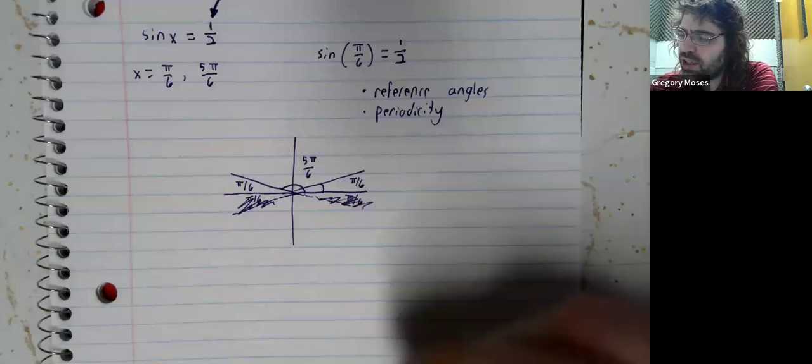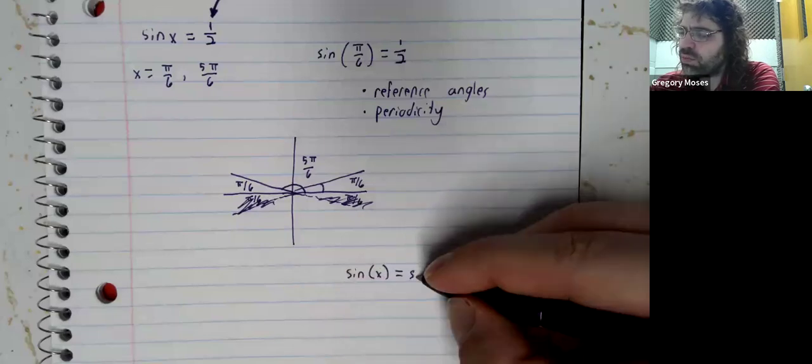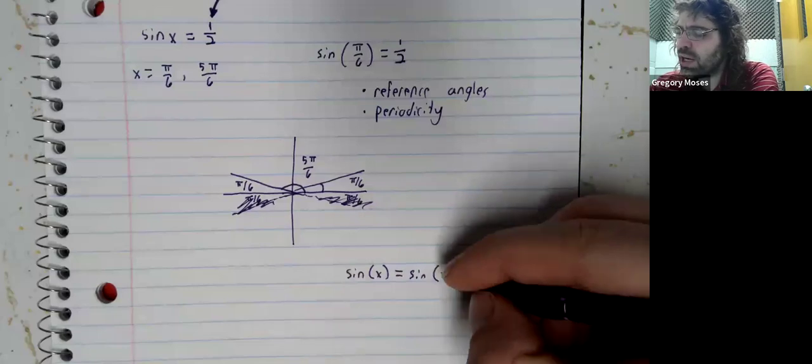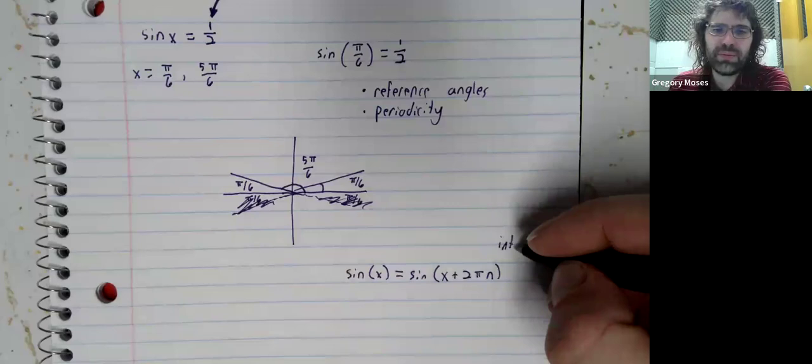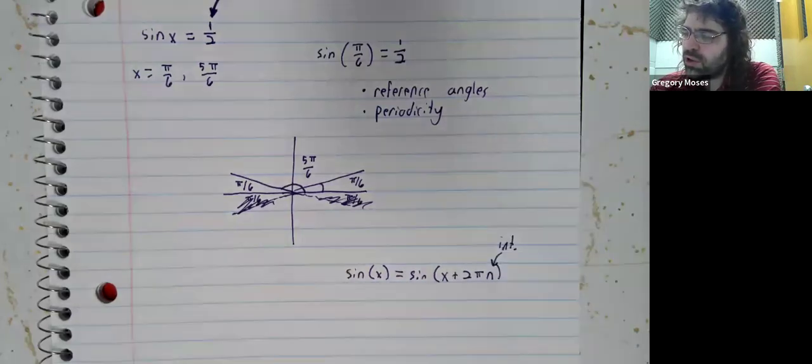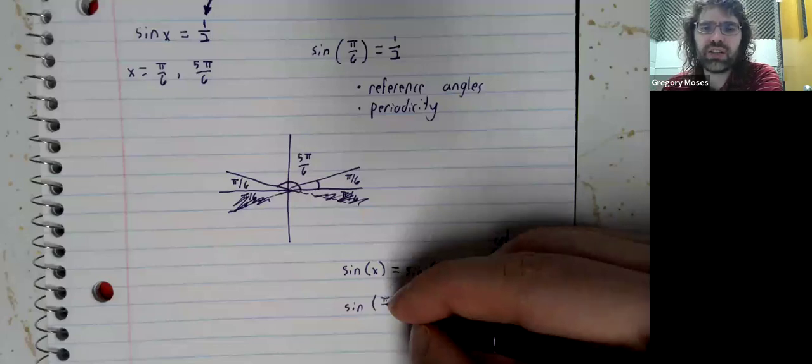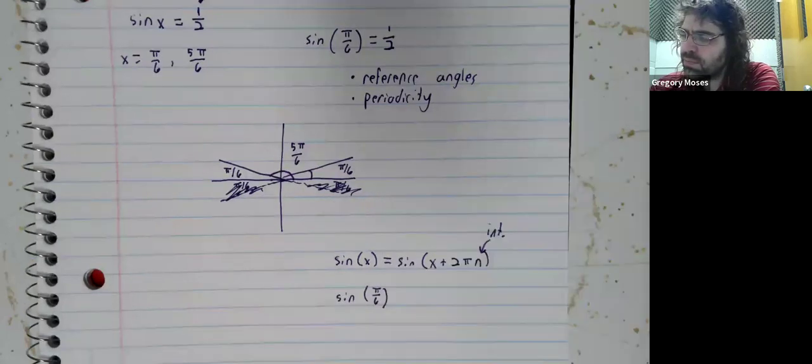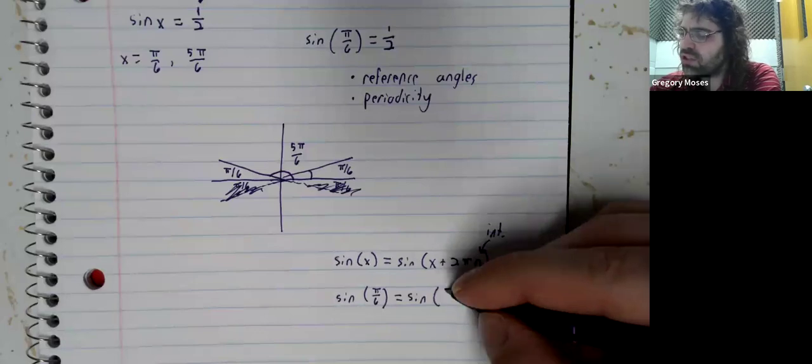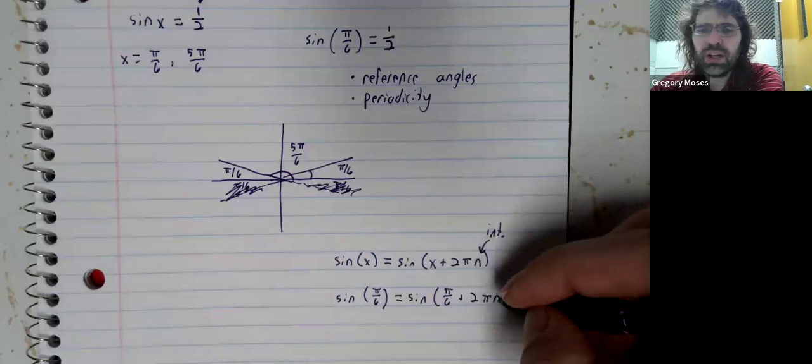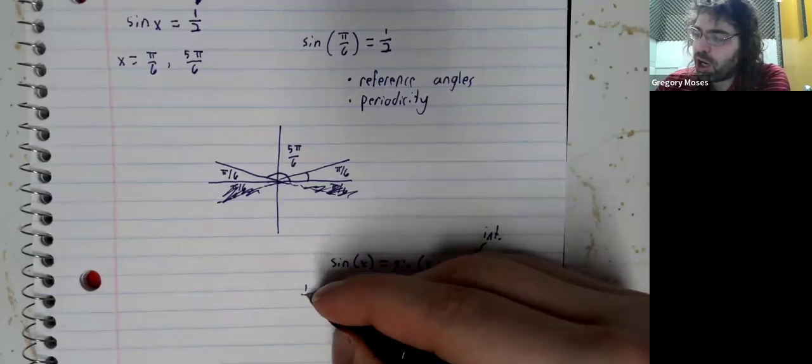The fact that the sine of x is the sine of x plus 2 times pi times n for any integer n. So, the sine of pi over six is the sine of pi over six plus 2 times pi times n for any integer n. And because this is one-half, we're getting a bunch of solutions here.